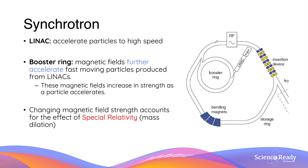This is a bird's eye view of a synchrotron. In the middle of the synchrotron we have a relatively small linac, which is a linear accelerator. This is used to accelerate particles from rest to very high speeds, and once the linac accelerates the particles to the desired speed, they enter the booster ring in which the particles are further accelerated by magnetic fields to even higher kinetic energies.